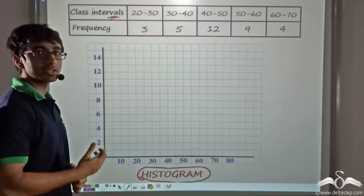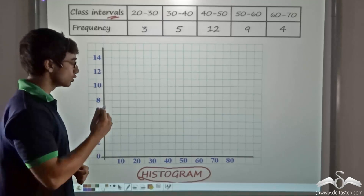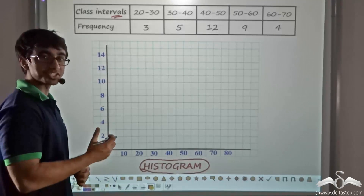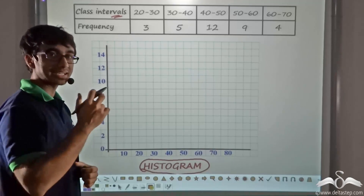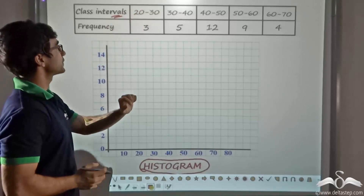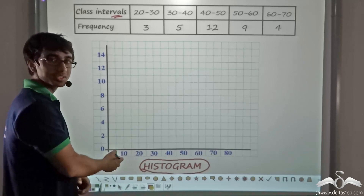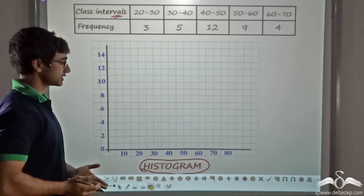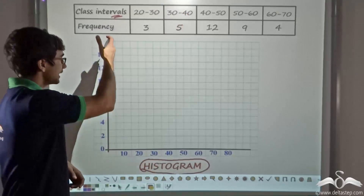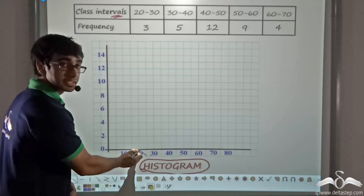Let us find out how to draw a histogram, because it is not the same as drawing a bar graph. There are certain technicalities and nuances attached to it. I will first show you how to start drawing a histogram, then explain the technicalities behind it. On the x-axis I am taking the class intervals or the variate, and on the y-axis I have considered the frequency.